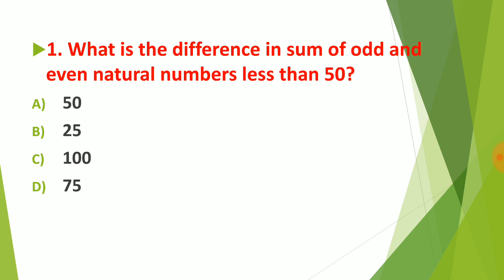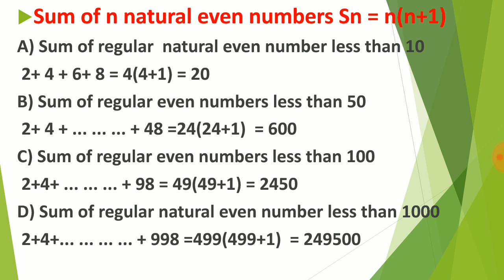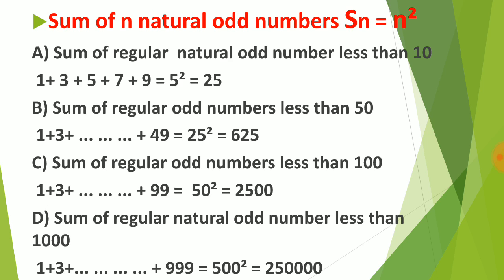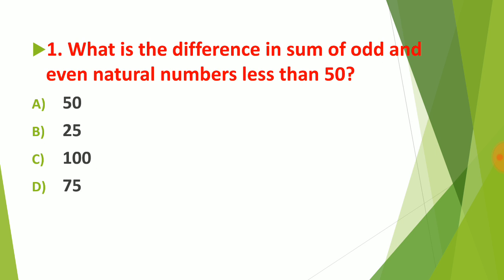Question 1: What is the difference in the sum of odd numbers and even numbers less than 50? From the table, the sum of even numbers less than 50 is 600 and the sum of odd numbers less than 50 is 625. So the answer is 625 − 600 = 25.